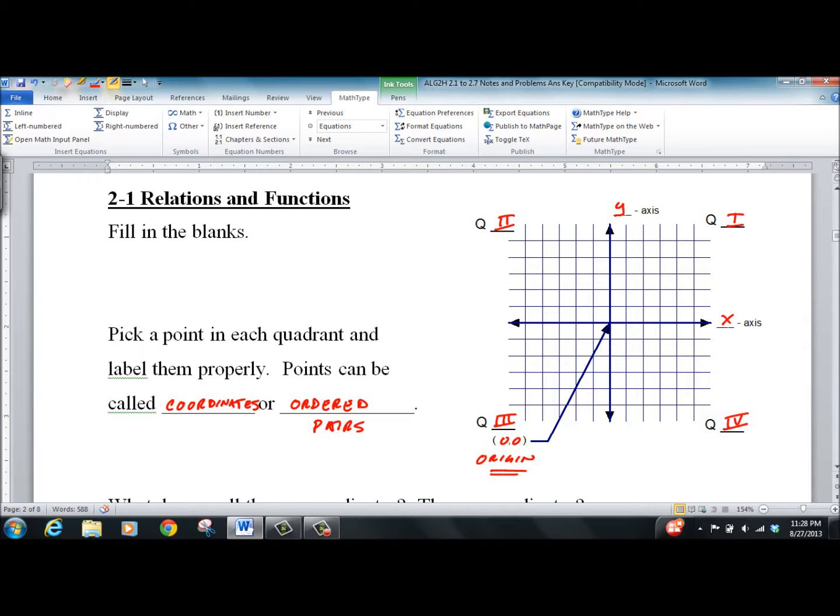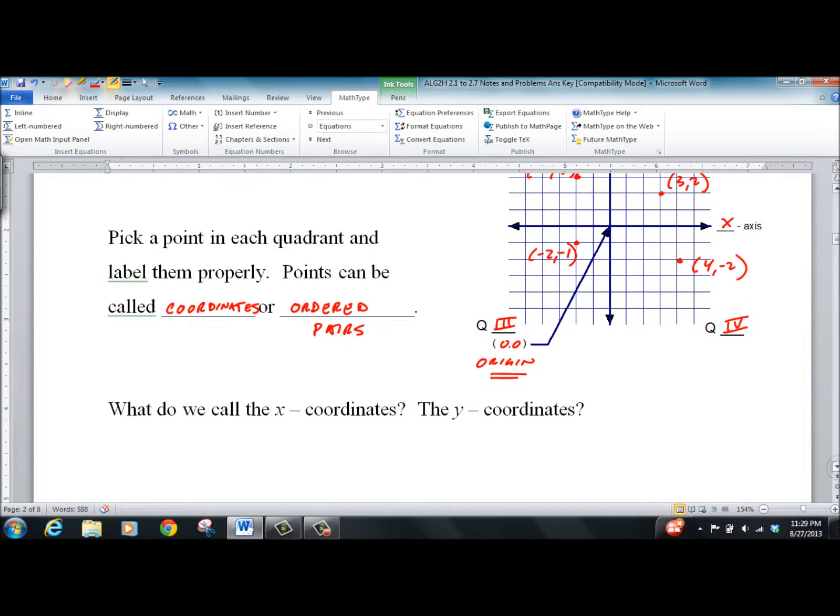I like to pick a point in each quadrant. So I'll go here. That's 3, 2. Here, negative 2, 3. Here, negative 2, negative 1. Here, 4, negative 2. Get good at it. You should have seen this many times before. Make sure you know what you're doing.